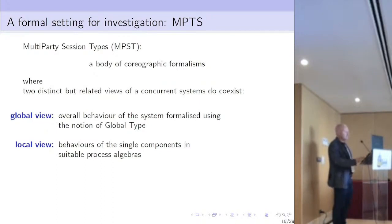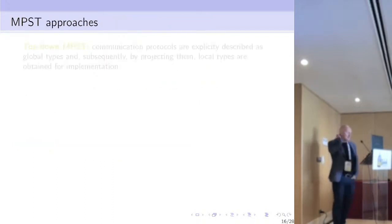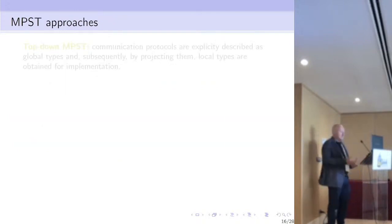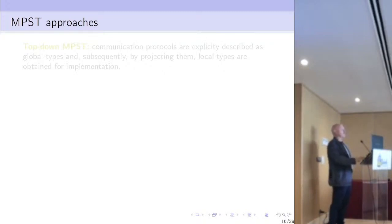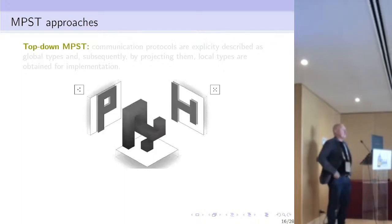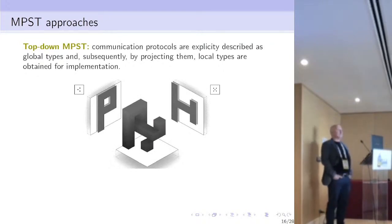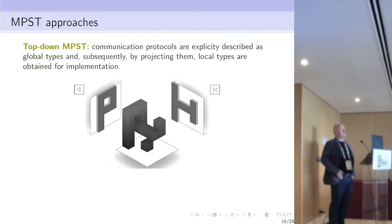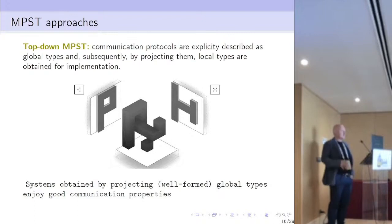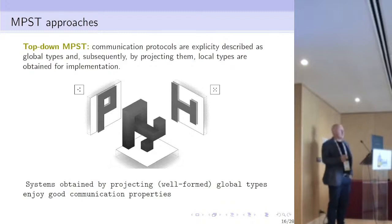There are many formalisms in this area. One class, which can be called top-down MPST, is where communication protocols are explicitly described as global types, and subsequently local types are obtained by projecting them using a projection function. Systems obtained by projecting well-formed global types enjoy good communication properties.